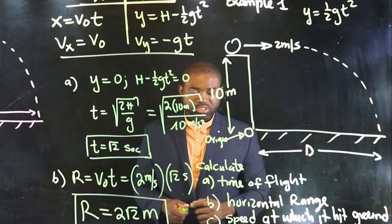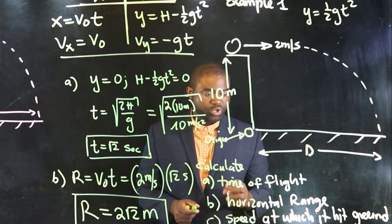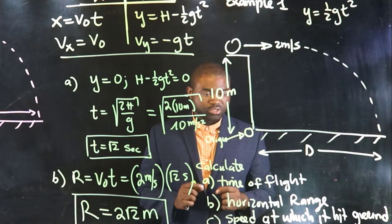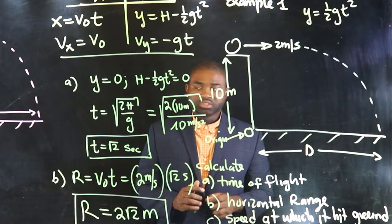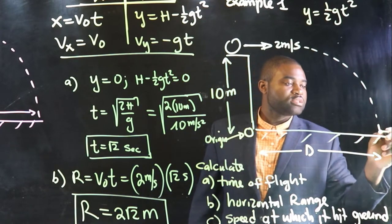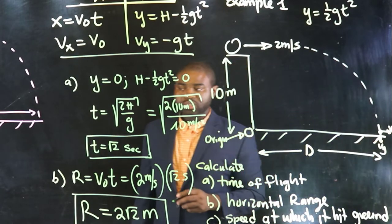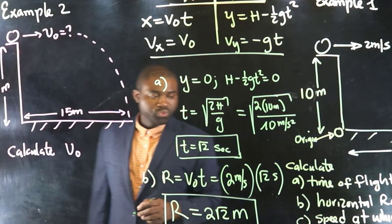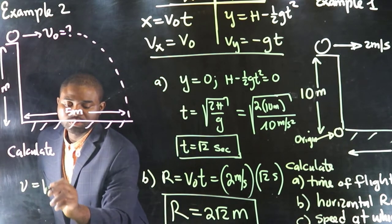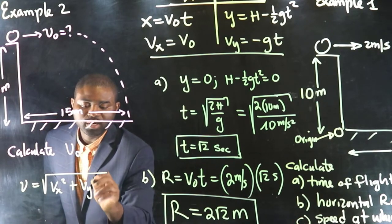Now, the next part, which is c, requires that we calculate the speed with which the ball hits the ground. Now, this is a little tricky because when the ball hits the ground, it has an x and a y velocity. So, the speed with which it hits the ground, v, is equal to the square root of vx squared plus vy squared.